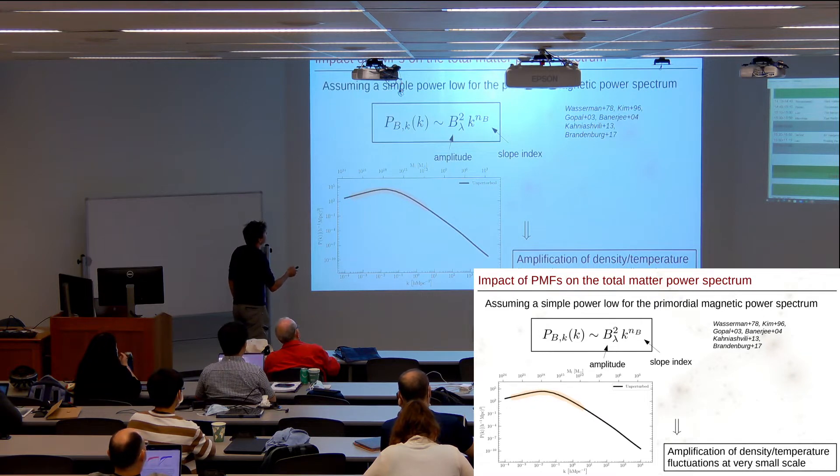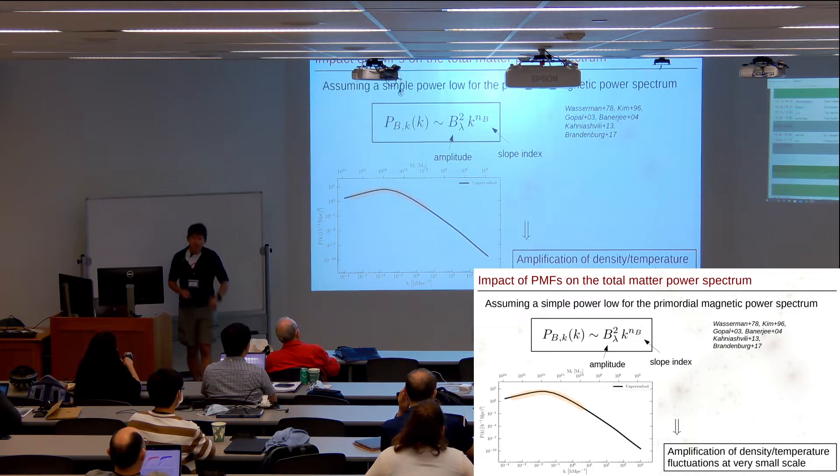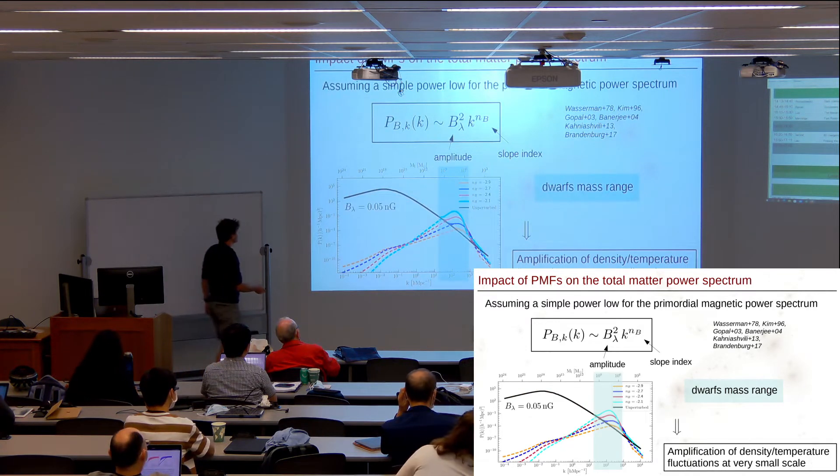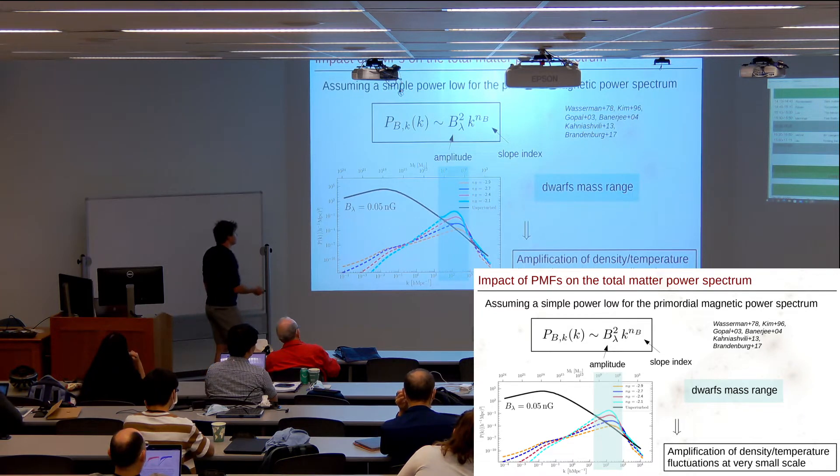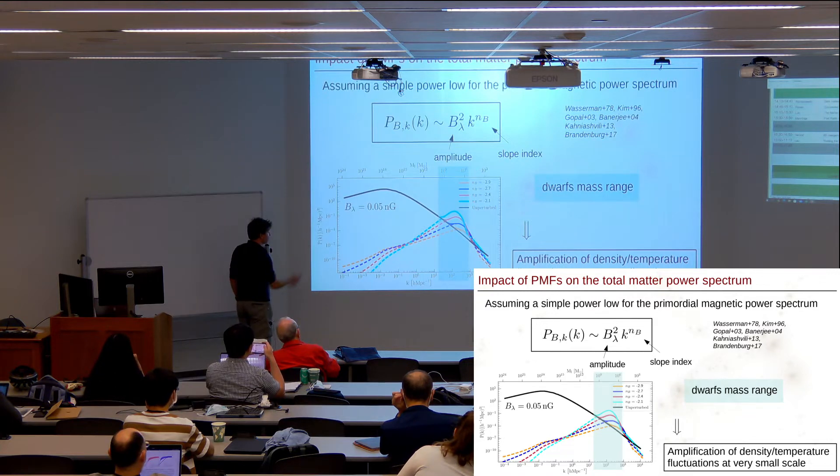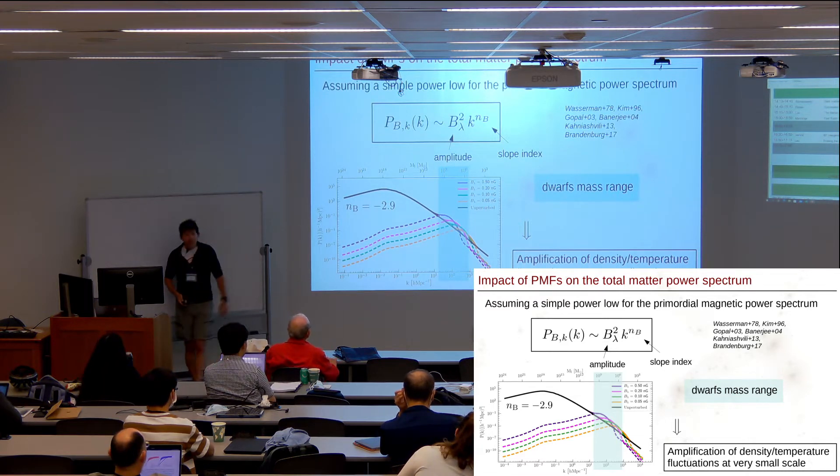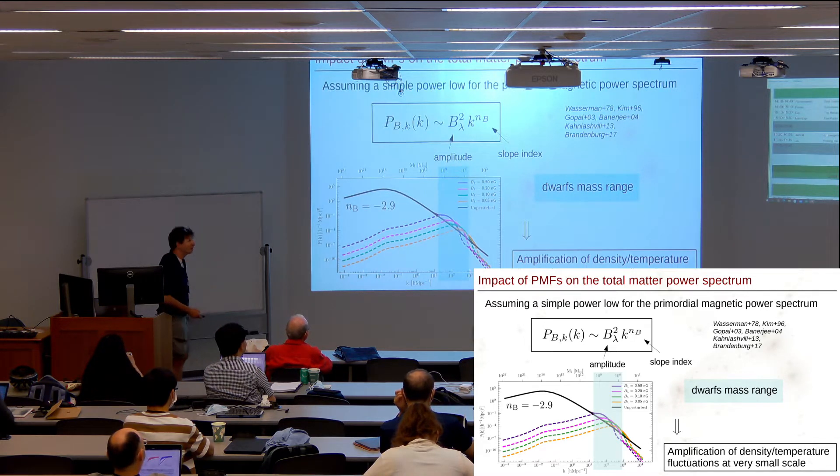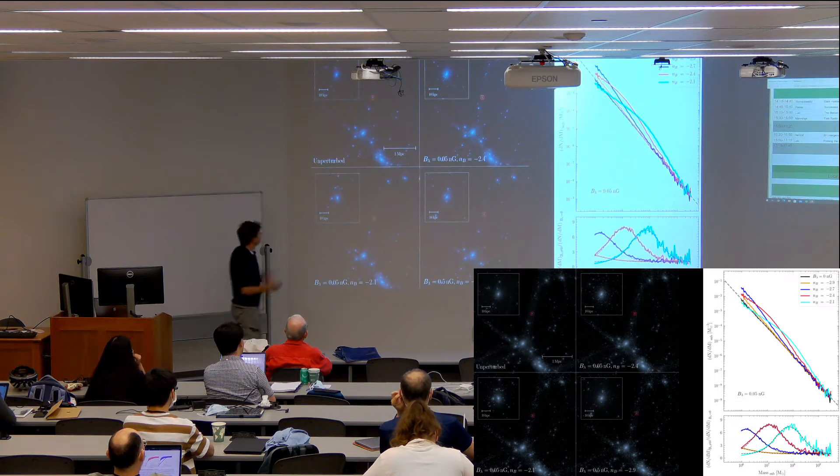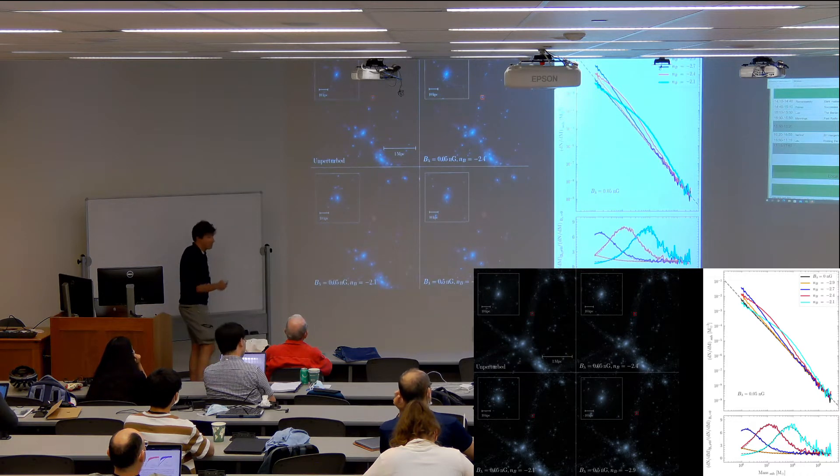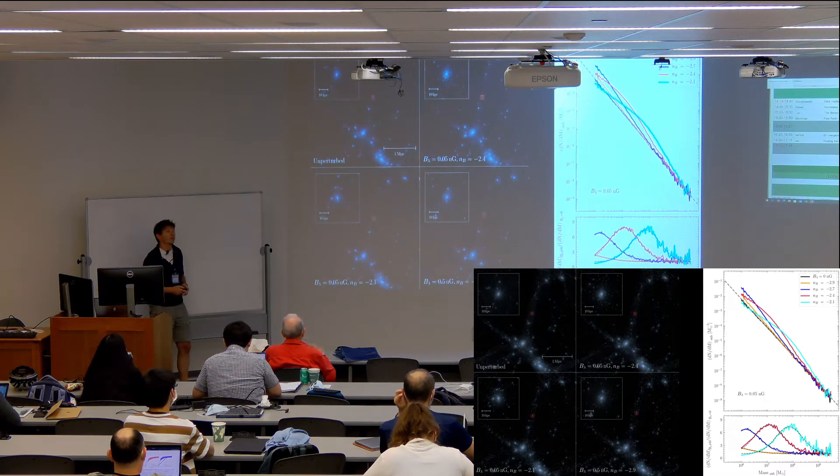If you assume the power spectrum of the primordial magnetic field is a simple power law with amplitude B_lambda and slope index n, and use machinery to see how this impacts the power spectrum, this is what you get. At very small scales, at the scale of dwarf galaxies, you see some bumps here. You expect direct influence on your dwarf galaxies. This is what I get when I fix the amplitude and modify the slope, or modify the amplitude and fix the slope.